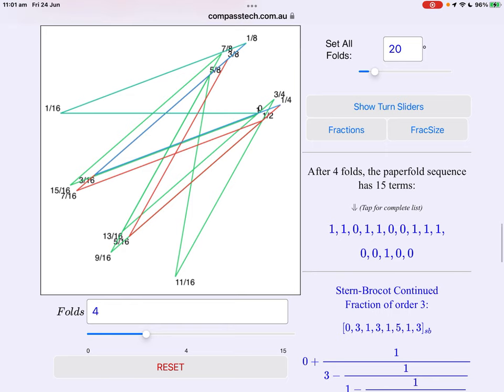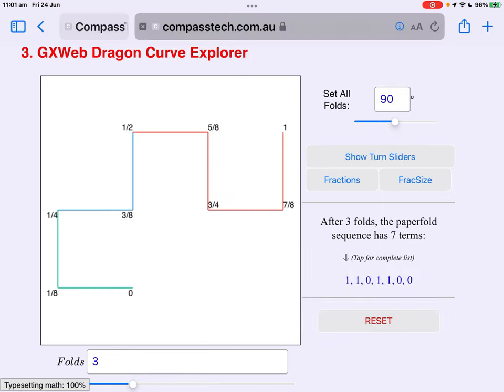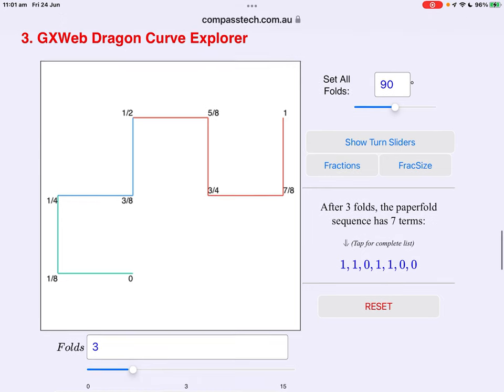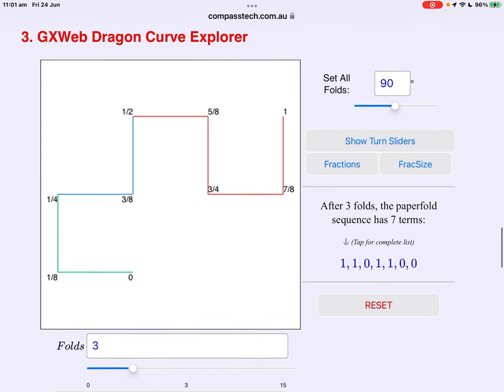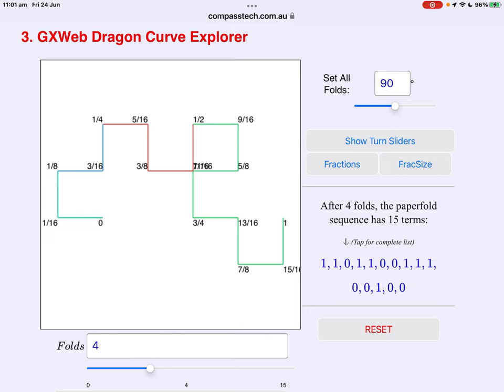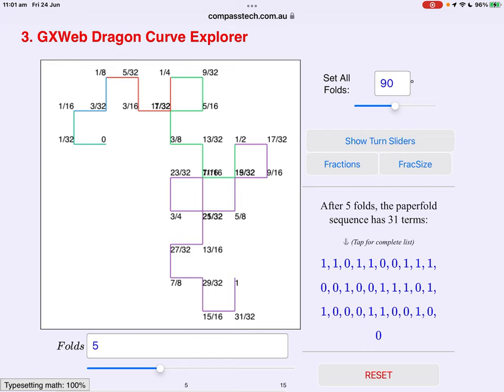Let's get an overall look at what we've got here. So this general dragon curve explorer lets you play with all the variables. For instance, four folds and at this point they're all folded at ninety degrees.